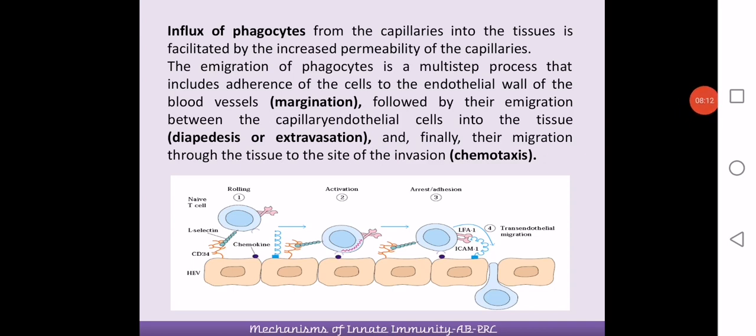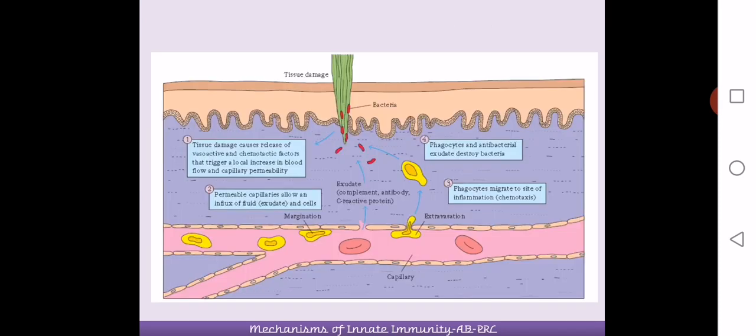To recap, in phagocytosis during inflammation, phagocytes arrive at the site, there is diapedesis and extravasation, then chemotaxis, followed by phagocytosis and destruction of the material, and finally release of the substance out of the phagocyte. All together, these events lead to inflammation.